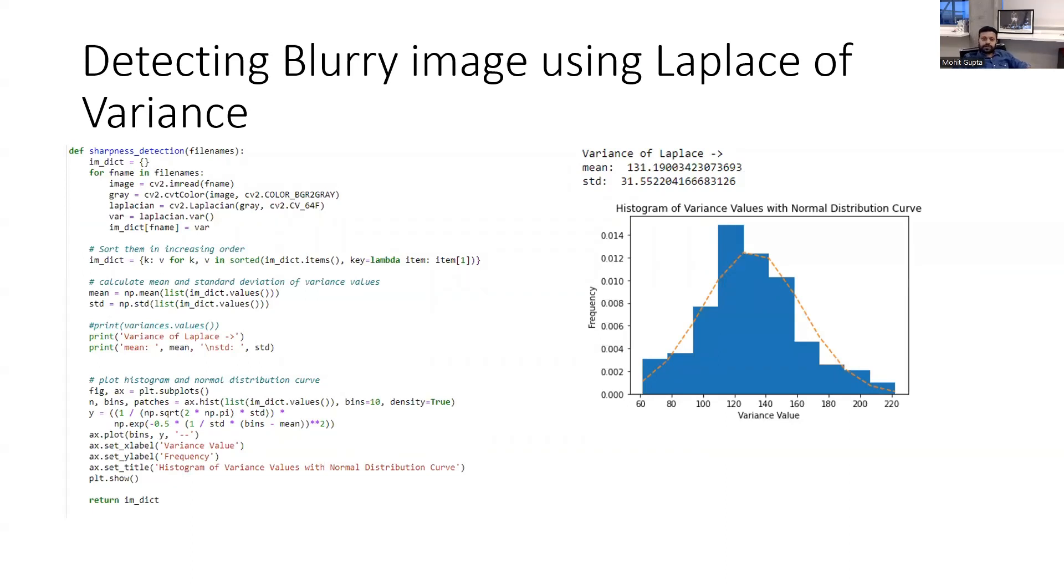And the second stage to remove blurry images was using Laplace of variance. So Laplace of variance tells you about the sharpness of an image. If you have a lower value of this Laplace of variance, it means that there are chances that you would have blurriness in the images. Otherwise, if you have a higher value of Laplace of variance, then it says that you have a sharp image. So what I'll do is for all the images in my folder, you can use this function. This function will create this kind of plot and it will show you how the value of Laplace of variance is changing in your whole folder, in all the images of your folder.